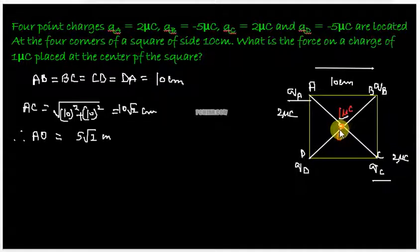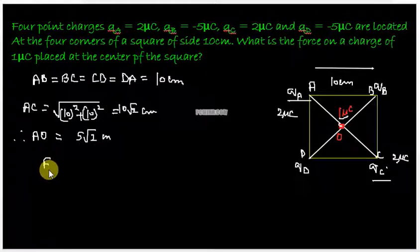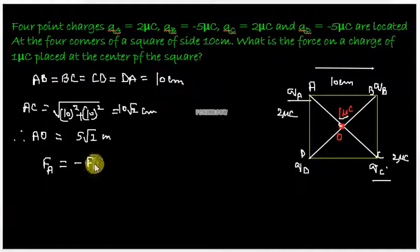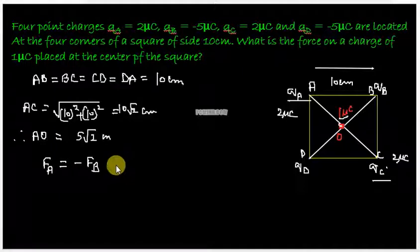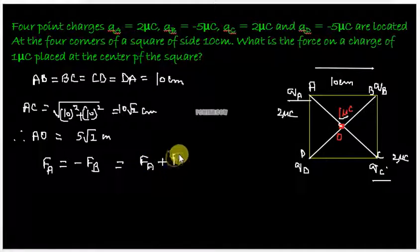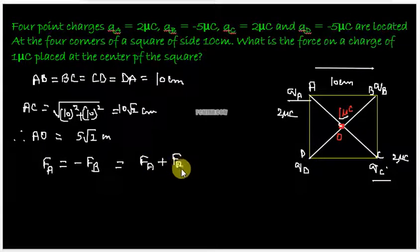So 1 micro coulomb is going to experience a force of repulsion from the charge at A and the charge at C and that is going to be equal and opposite. So force due to charge FA is going to be equal and opposite to the charge FC because the magnitude is going to be the same but the directions are going to be opposite. So we would have a net effect that the resultant force on the charge at O is going to be 0.